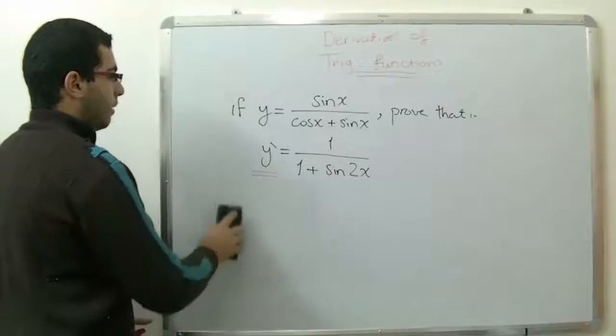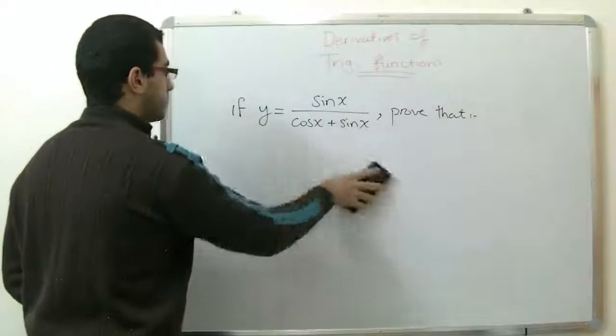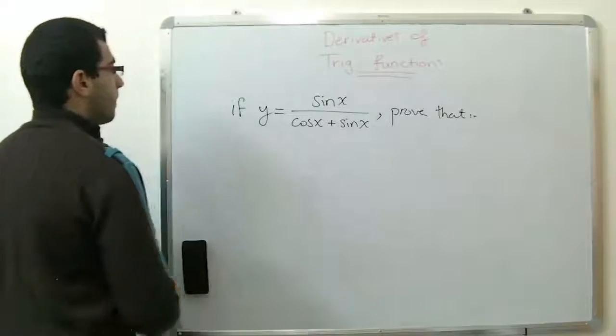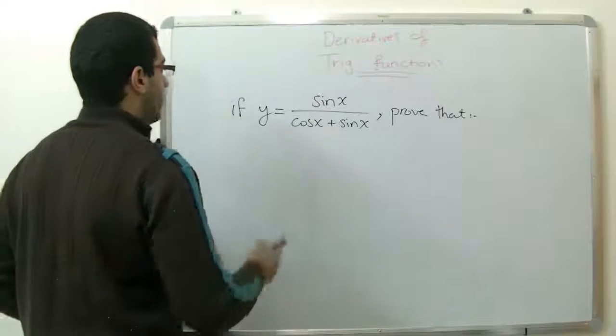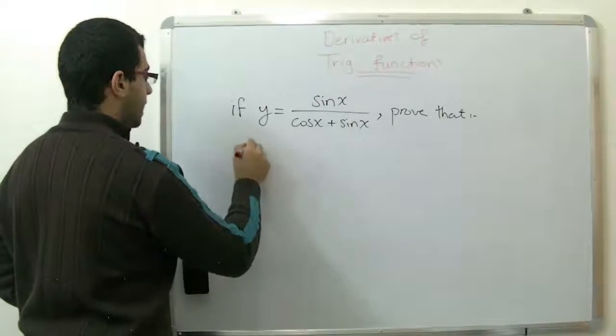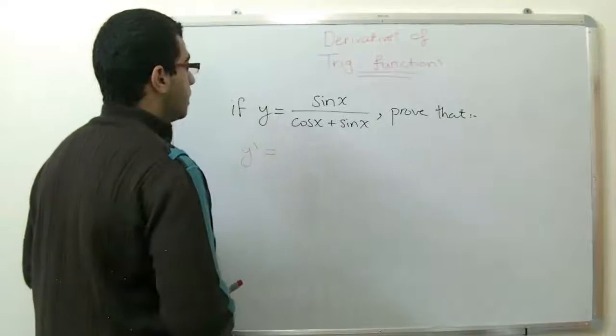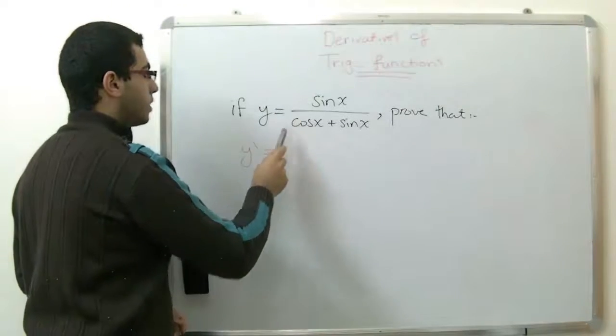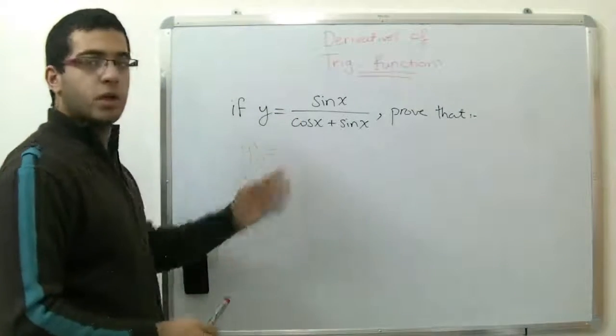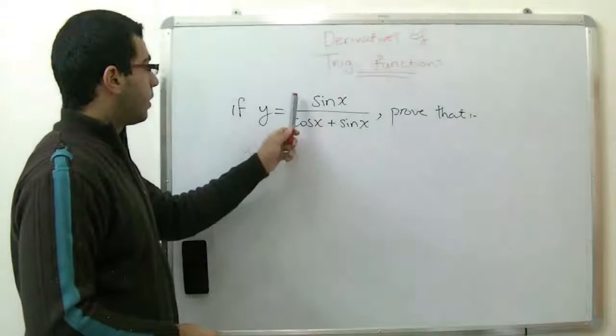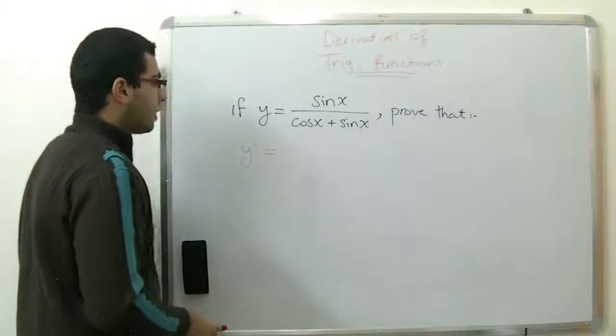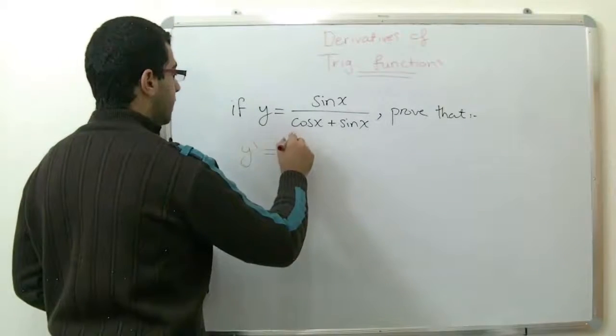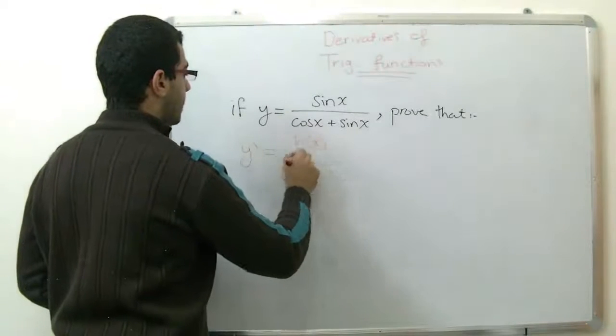So let's begin solving our problem. We have here y dash equals. Those are two functions divided by each other, so we will use the rule of h(x) over d(x).